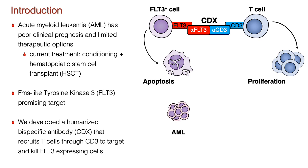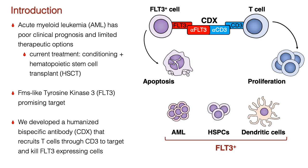In addition to surface expression on AML blasts, FLT3 is normally expressed on hematopoietic stem and progenitor cells, HSPCs, and downstream blood lineages such as dendritic cells. Surface expression of FLT3 in leukemic cells, as well as in HSPCs, makes it an excellent target for T-cell-mediated conditioning that specifically eliminates both AML blasts and HSPCs, allowing for subsequent transplantation.